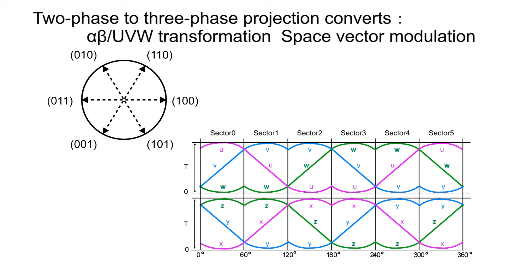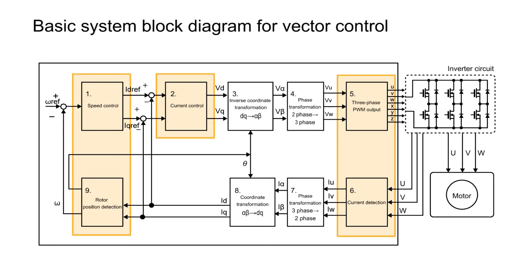That concludes the description. In the next chapter, we will describe speed control, current detection, and position detection.